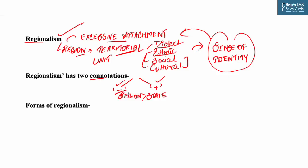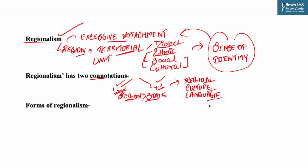Negative regionalism implies excessive attachment to one's region in preference to the country or the state. It is negative because it can be a great threat to the unity and integrity of the country. On the other side, positive regionalism is a political attribute associated with people's love for their region, culture, language, etc., with a view to maintaining their independent identity. It encourages people to develop a sense of brotherhood and commonness based on common language, regional religion, or historical background. The best example of negative regionalism is the Khalistan issue, while the reorganization of southern Indian states based on language is an example of positive regionalism.